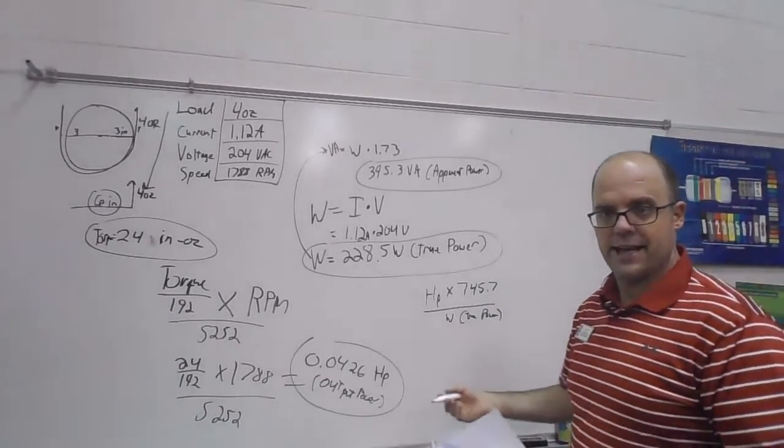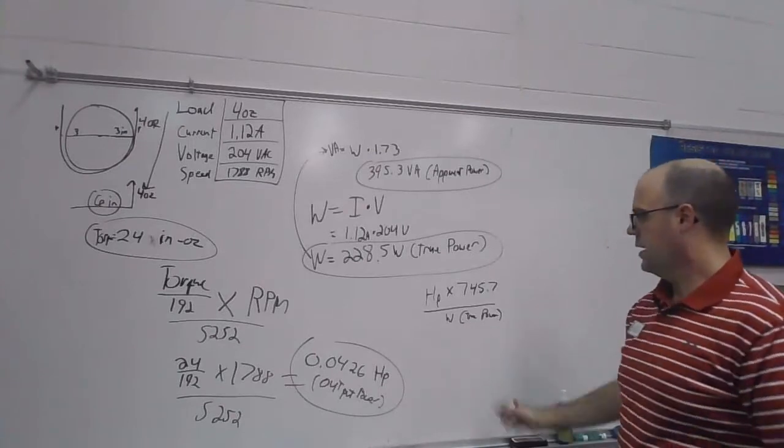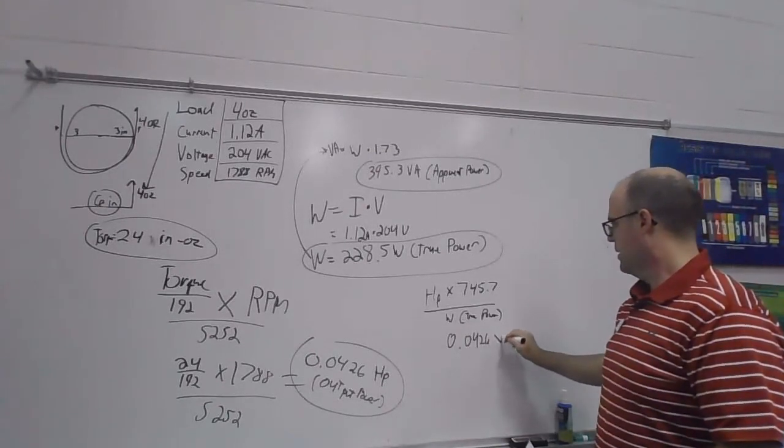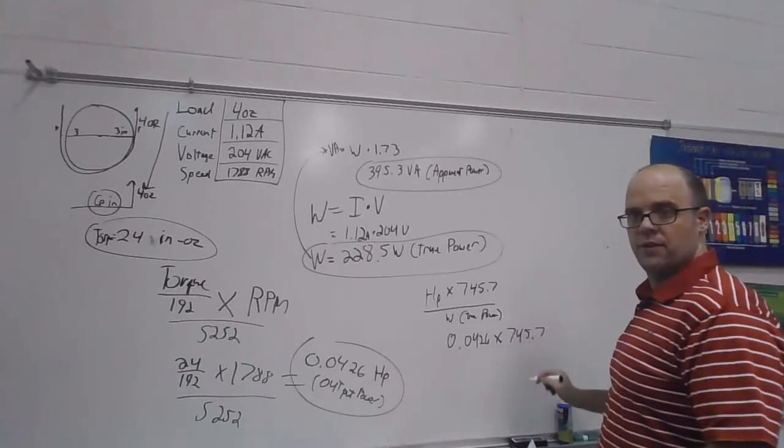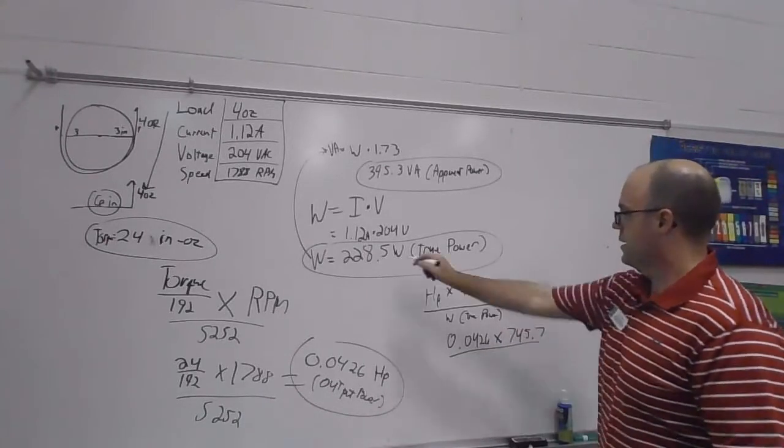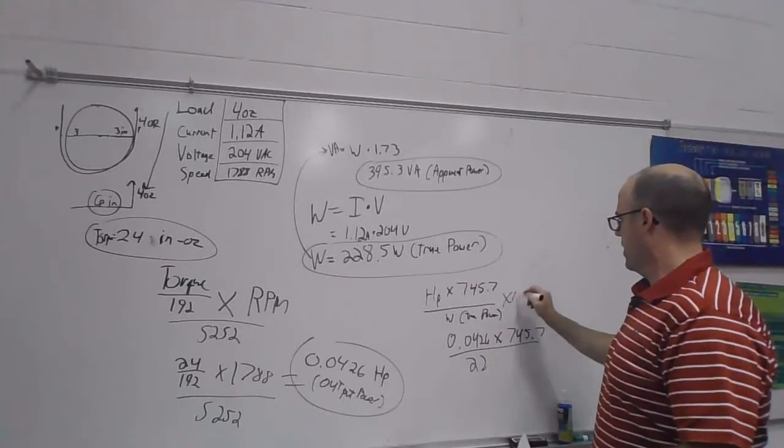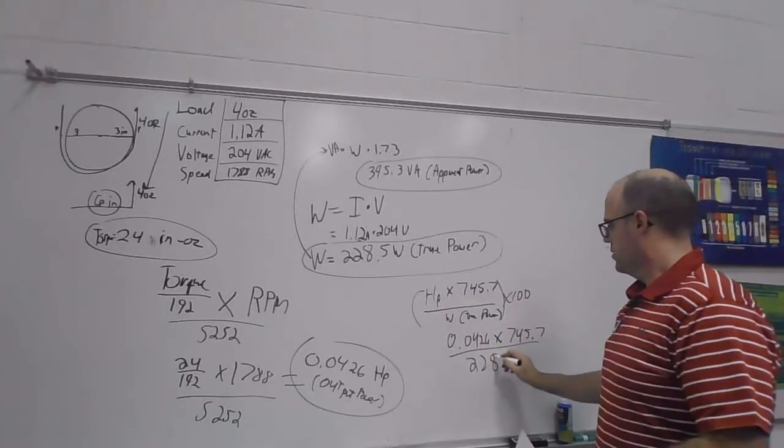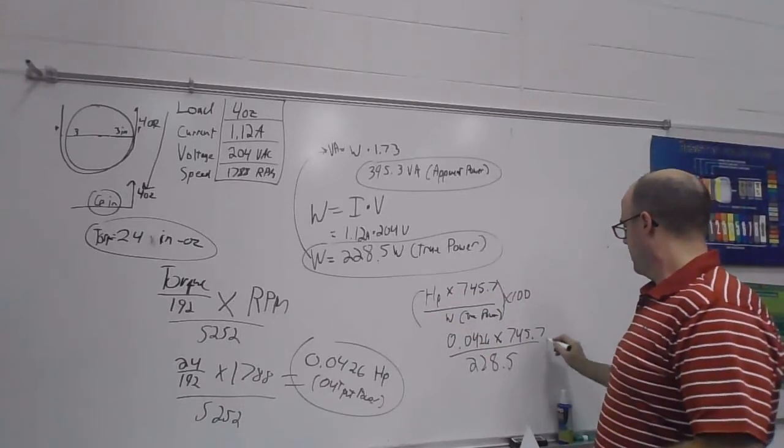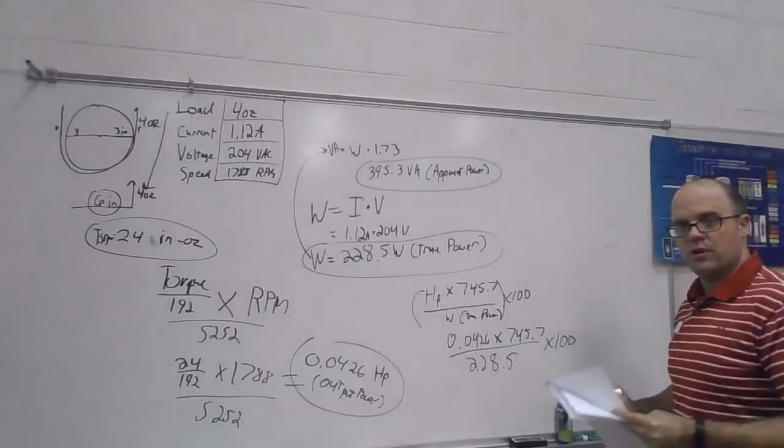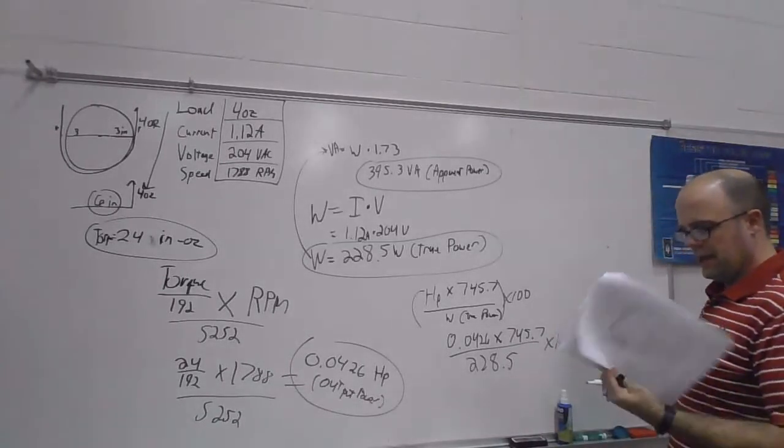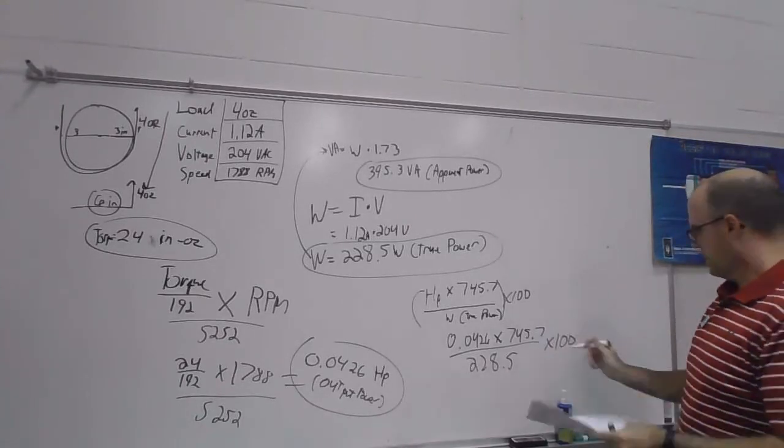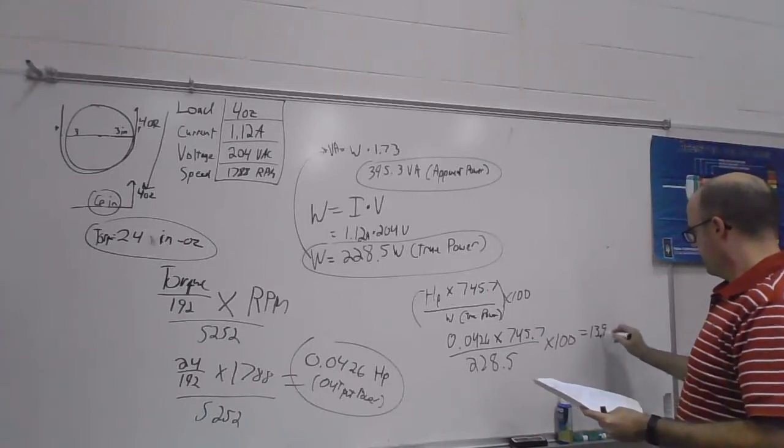And if I plug all that in, I do 0.0426 times 745.7, divide it by, oh let me multiply that by 100. Sorry, the whole thing by 100. 28.5 times 100. And that will give me an efficiency of, where's my math at? 13.9%.